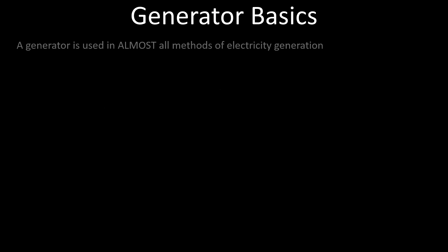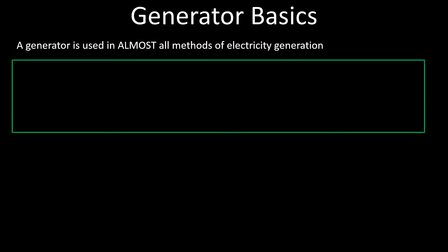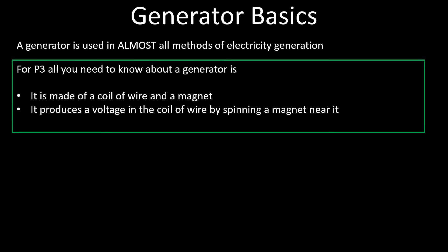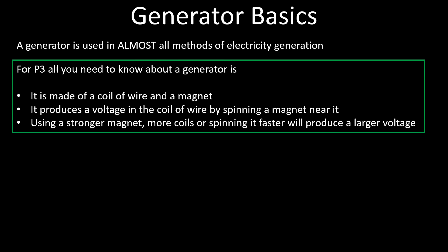This P3 video is on power stations. I'm going to first talk about generators because they're used in almost all methods of electricity generation apart from solar. All you need to know is that to make a generator you need a coil of wire and a magnet, and the magnet needs to rotate inside the coil of wire and that will produce a voltage.